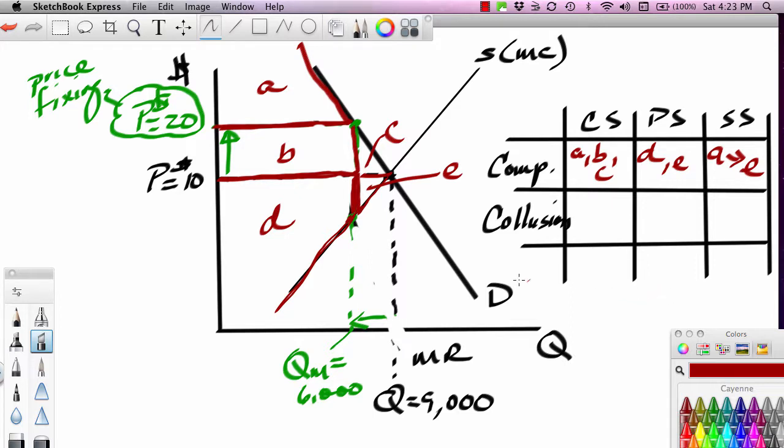Now, if the price jumps to 20 and the output rate drops to 6,000, what do consumers get? Consumers get A. So consumers lose what? B and C. Consumers lose. So cartelization, monopolization, bad for consumers.